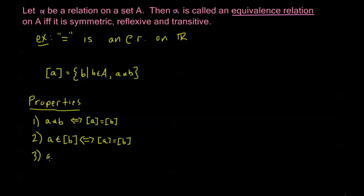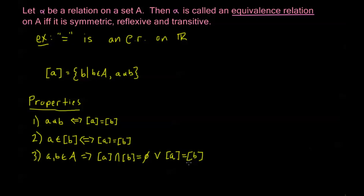Now, if A and B are both elements of my set A, this implies that either the equivalence class generated by A intersected with the equivalence class generated by B is equal to the empty set, or the equivalence classes are equal. What this says is that equivalence classes are either equal or disjoint. If one equivalence class is different from another in any way, they can't possibly share any elements, because any shared elements would close that gap — they would create an equality. So either these equivalence classes are equal or their intersection is empty. They either have all elements in common or no elements in common. There's no middle ground.